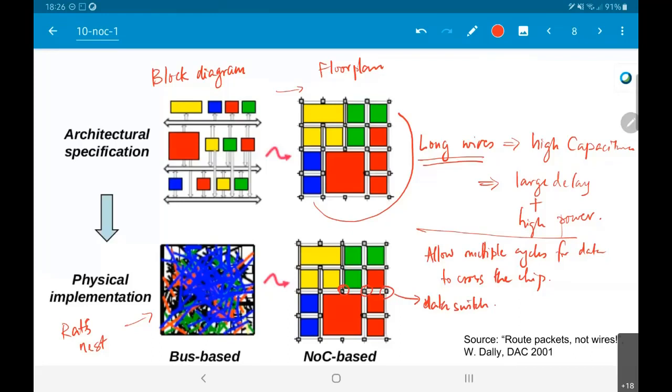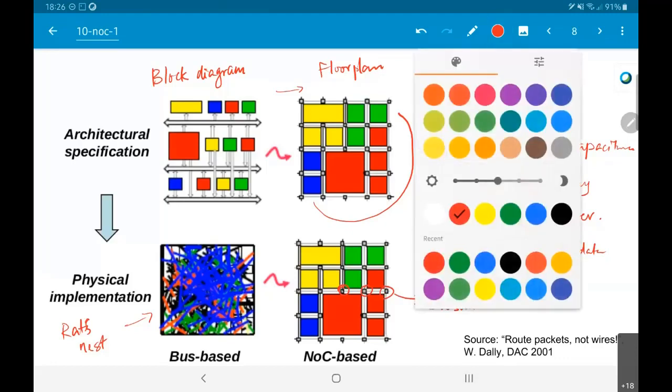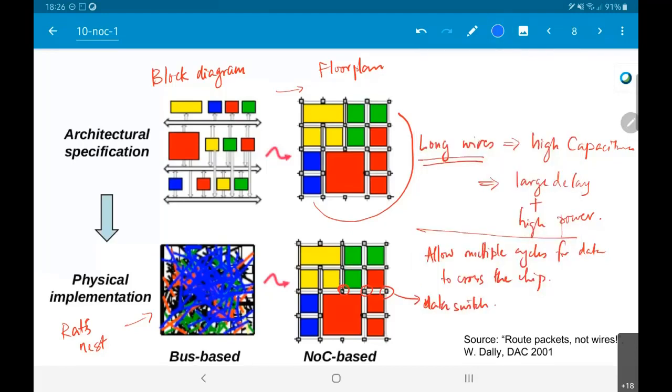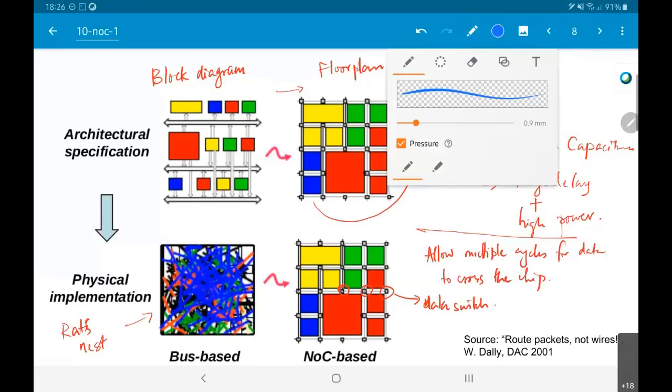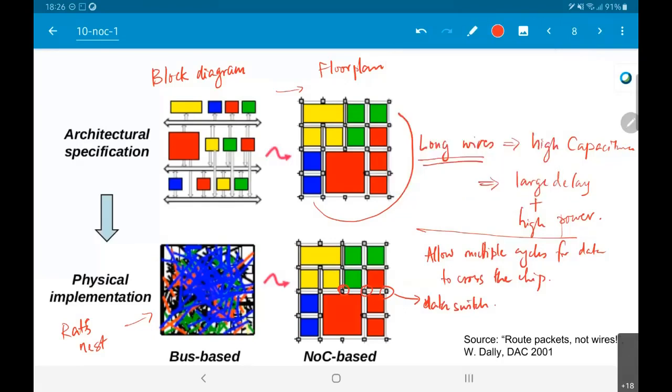Let's say red wants to communicate with yellow, it would probably send it out through something like this, and it would go something like this. This is how it reaches. Or if it wants to communicate with green, it would probably go this way, this way, and finally come back somewhere out here.